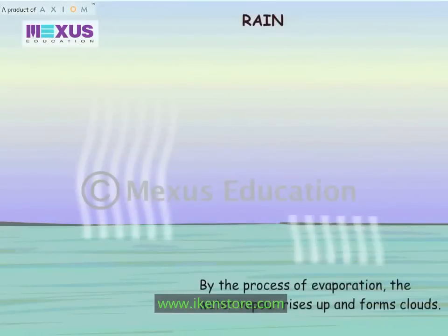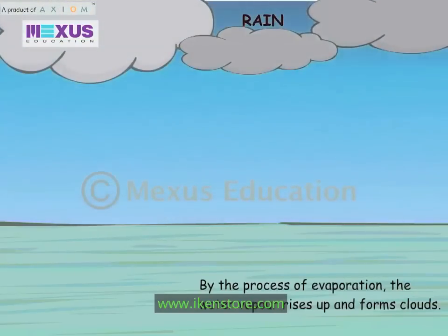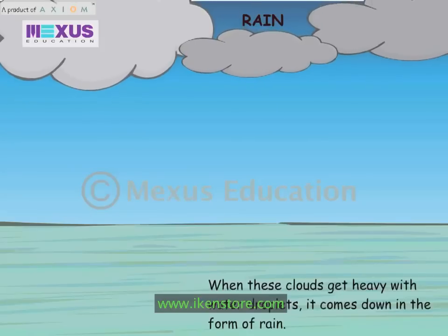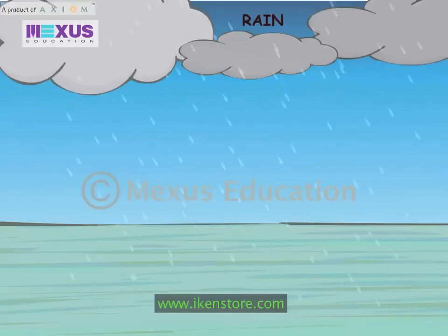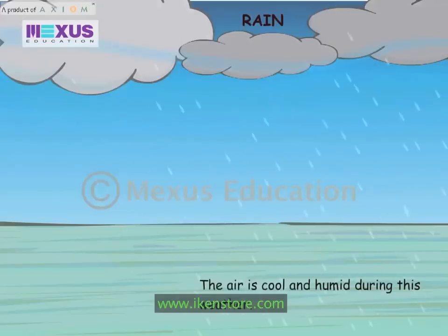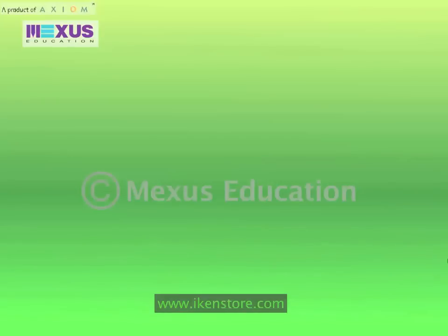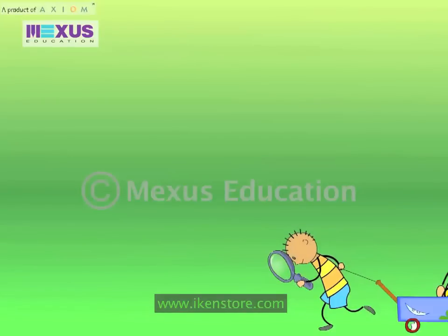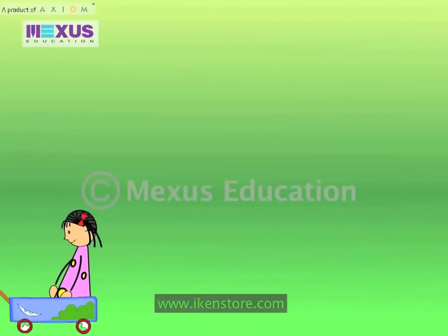By the process of evaporation, the water vapour rises up and forms clouds. When these clouds get heavy with water droplets, it comes down in the form of rain. The air is cool and humid during this weather.